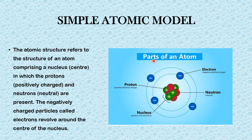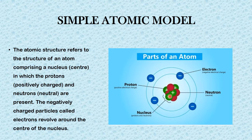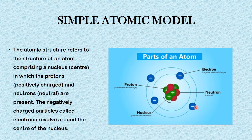Now moving on, we'll be looking at the simple atomic model. As you can see in the picture here, the atomic structure refers to the structure of an atom comprising a nucleus which is at the center. Within the nucleus you have the protons, which are positively charged — shown here as the green balls — and neutrons, which are neutral, meaning they carry no charge. The negatively charged particles called electrons revolve around the center of the nucleus, as you can see here. This is the description of the simple atomic model.